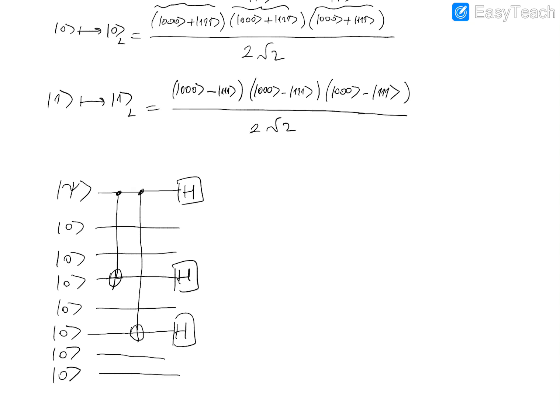This completes the first phase. Now we apply the bit flip codes. For each of the three three-qubit blocks, we apply the bit flip transform: taking the first qubit of the block as the control qubit, we apply a CNOT transformation on the second qubit and then another CNOT on the third qubit. Then we do the same thing for the other blocks.